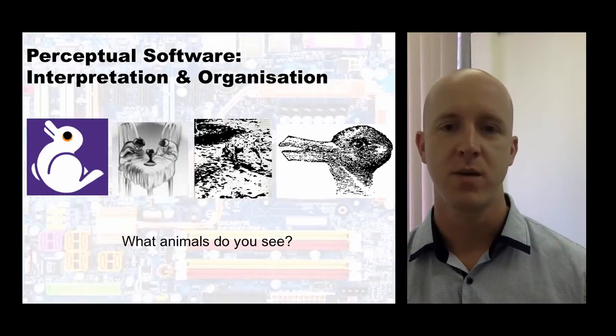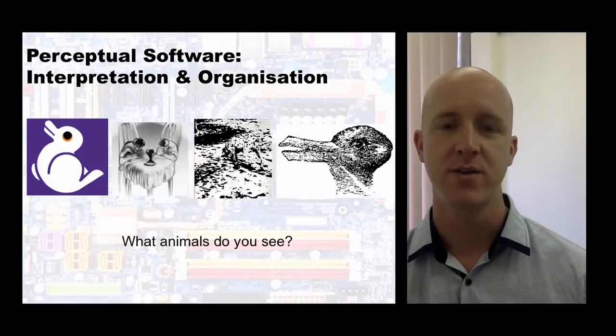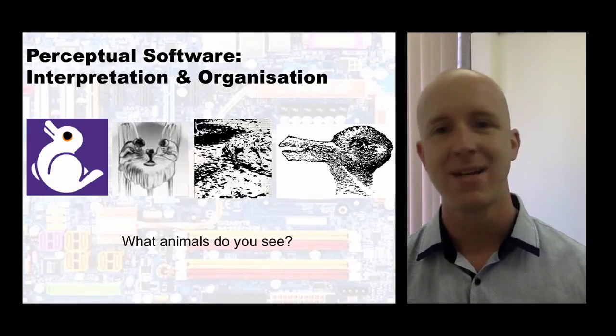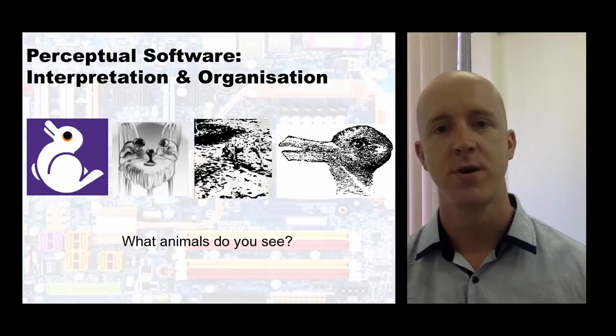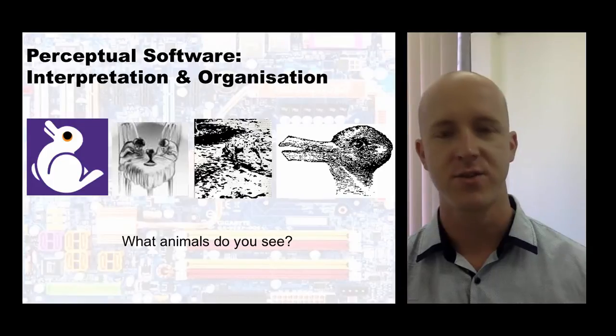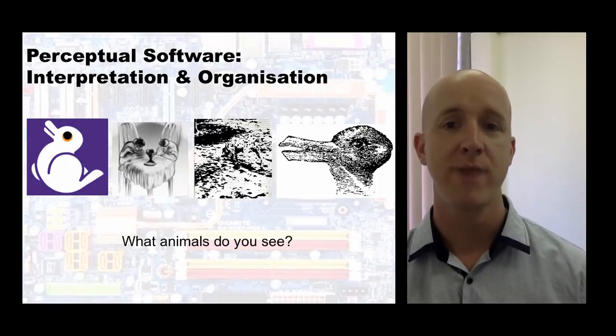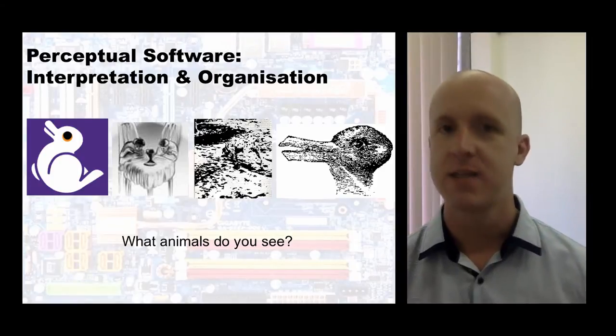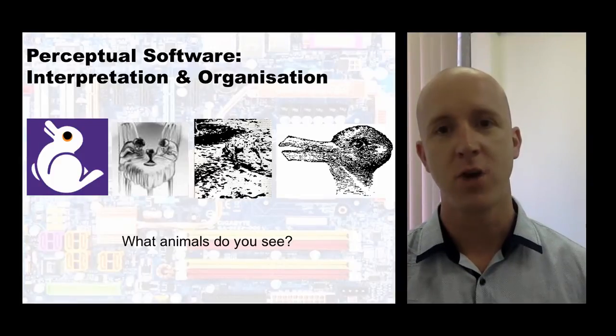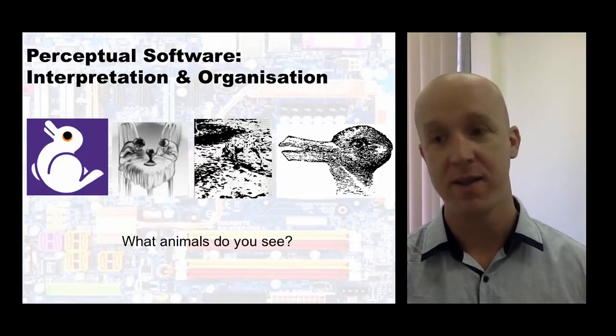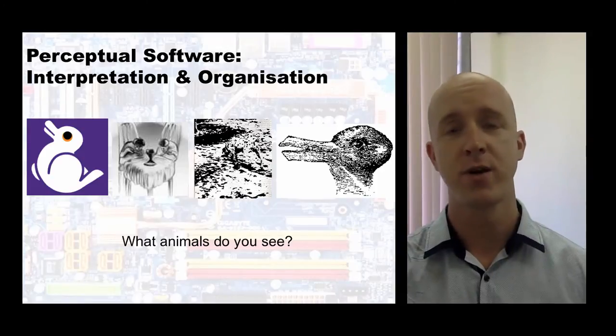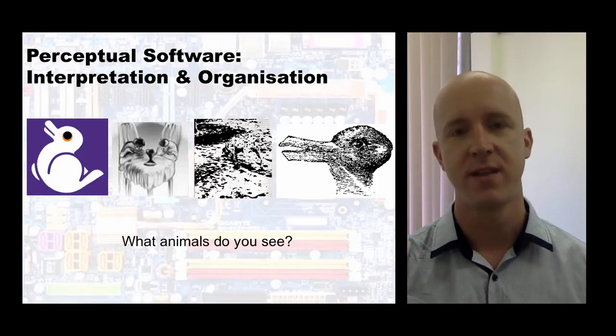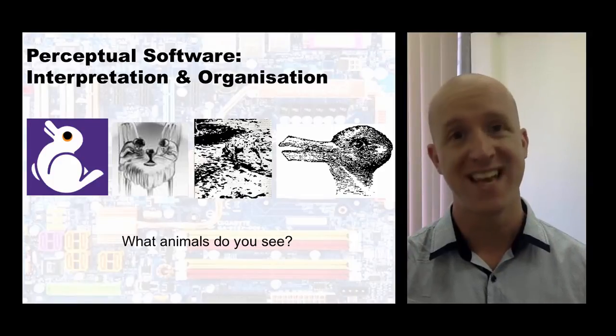It's an example of how you're not seeing what's objectively there, you're seeing what you're told to look for. In the third picture, which appears to be just black and white dots, many people struggle to see anything until you're told to look for a dog sniffing the ground. It's a top-down process, not bottom-up. We're actively influencing the processing of information as it enters our system.